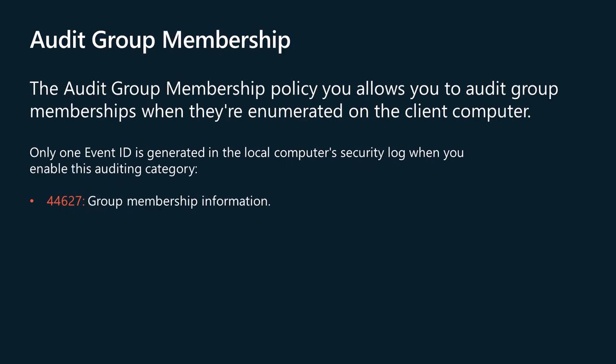The Audit Group Membership policy allows you to audit group memberships when they're enumerated on the client computer. This policy allows you to audit the group membership information in the user's logon token. Events in this subcategory are generated on the computer on which a logon session is created. For an interactive logon, the security audit event is generated on the computer that the user logged on to. For a network logon, such as accessing a shared folder on the network, the security audit event is generated on the computer hosting the resource. Only one event ID is generated in the local computer security log when you enable this auditing category.